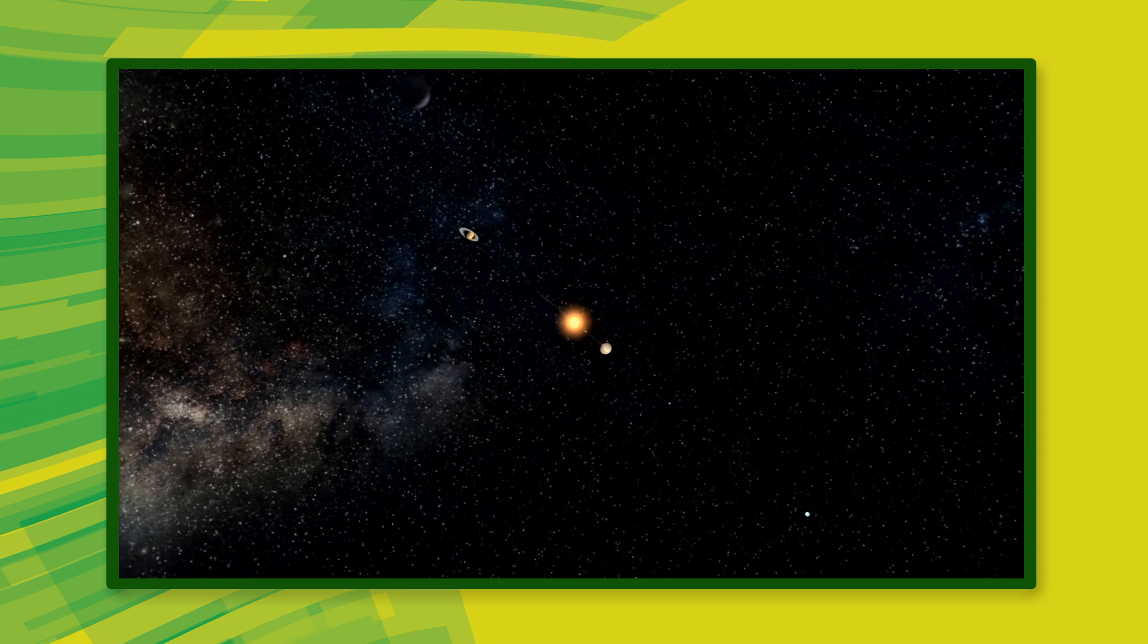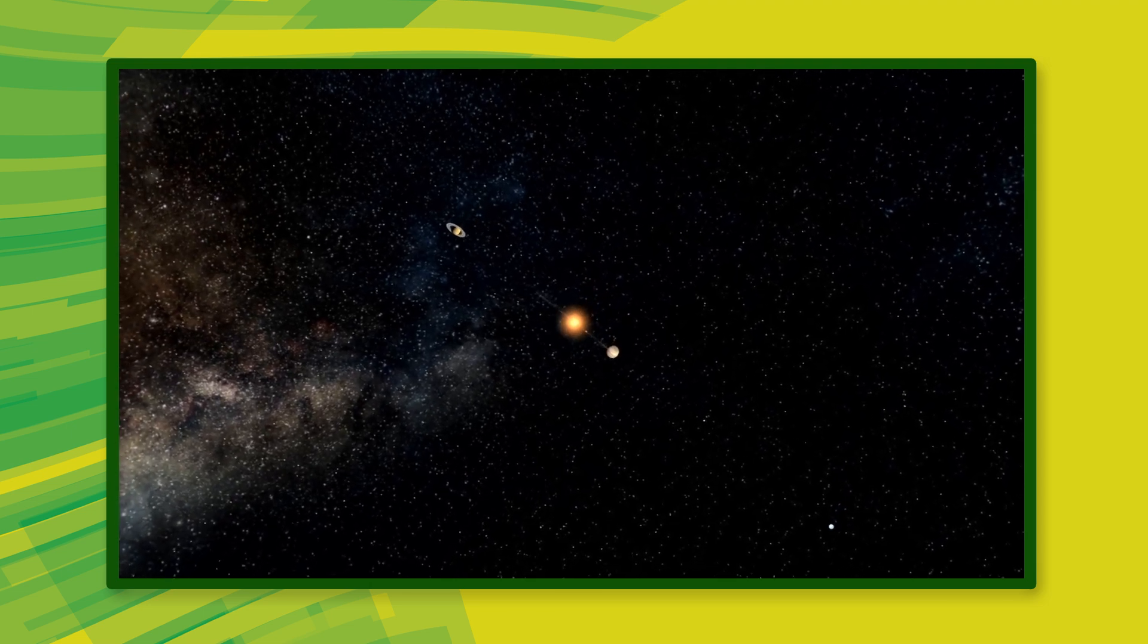It is a yellow dwarf star, a hot ball of glowing gases. The Sun is the largest object in our solar system, comprising 99.8% of the system's mass.